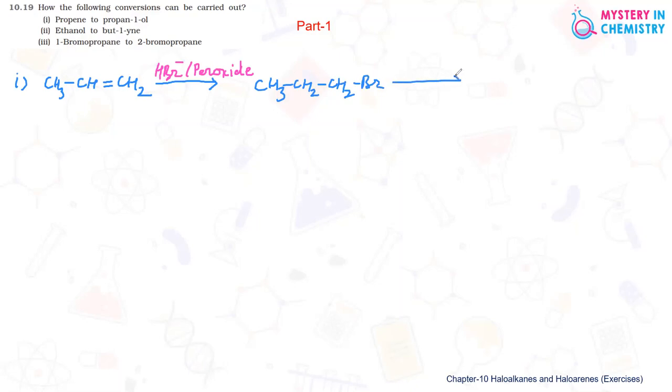And this can be converted to the final compound. Just in two steps, propene can be converted to propane-1-ol. The reaction should be with KOH in aqueous solution. Then Br can be replaced by OH group and the product formed is CH3-CH2-CH2-OH. Propane-1-ol is formed.